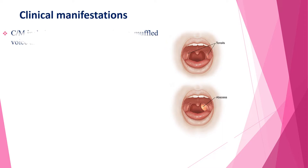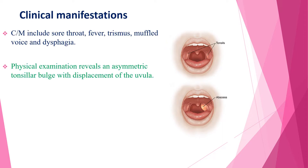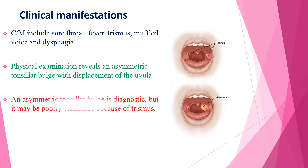Regarding clinical manifestations, the most common clinical symptoms are sore throat, fever, trismus, muffled voice, and dysphagia. On physical examination, an asymmetric tonsillar bulge with displacement of the uvula is seen. This asymmetric tonsillar bulge is diagnostic, but might be poorly visualized because of trismus.